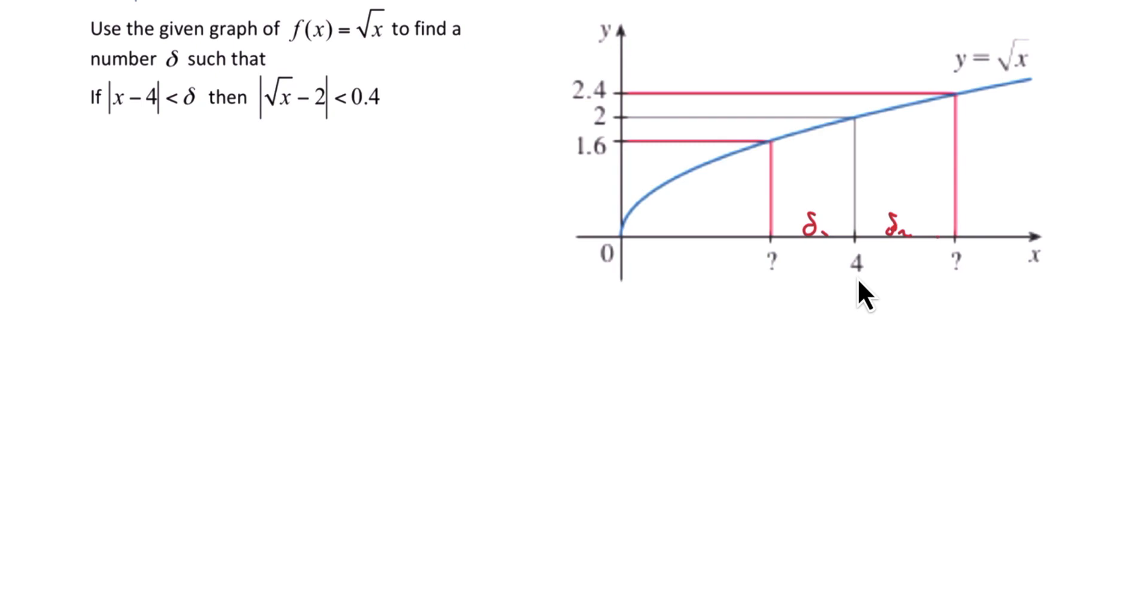In order to find those, we need to first figure out what's beside 4. So we'll call these question marks x1 and x2, and once we find those, we can find our deltas.